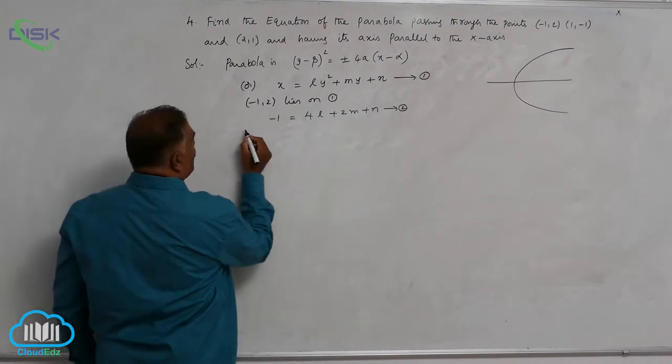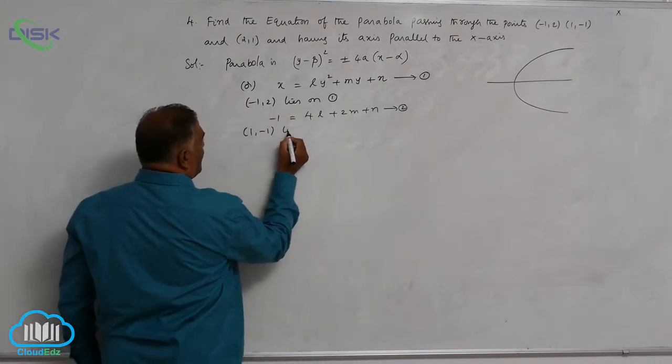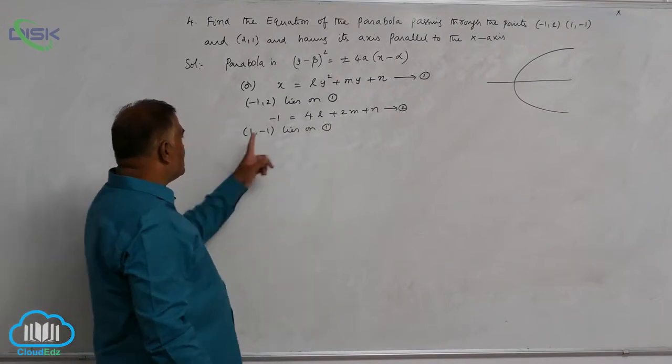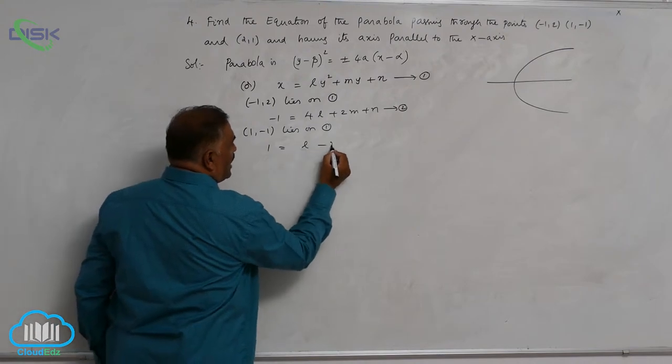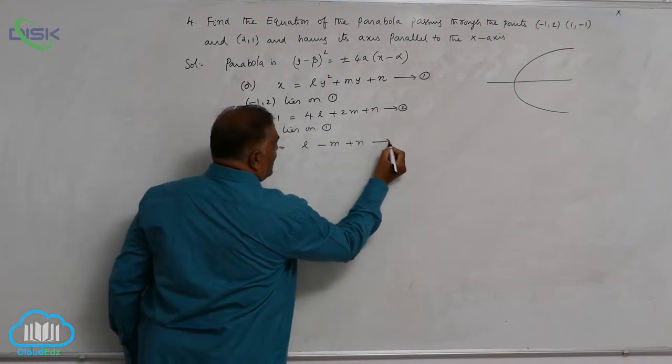Then comes (1, -1) lies on 1. Again, substitute here: 1 = l - m + n, equation 3.